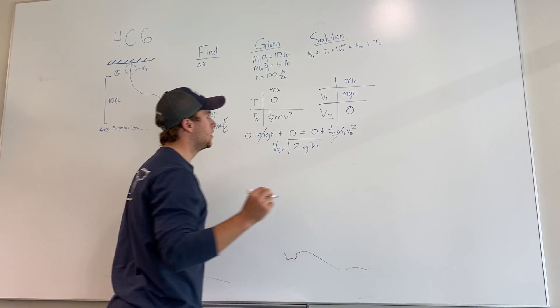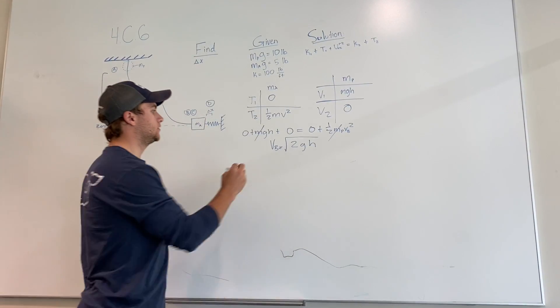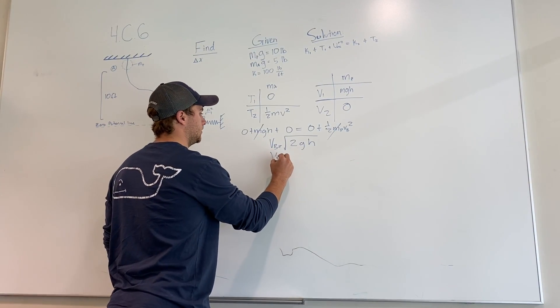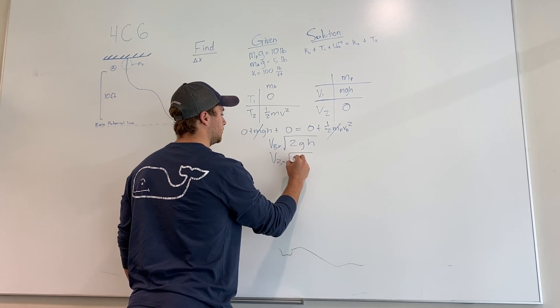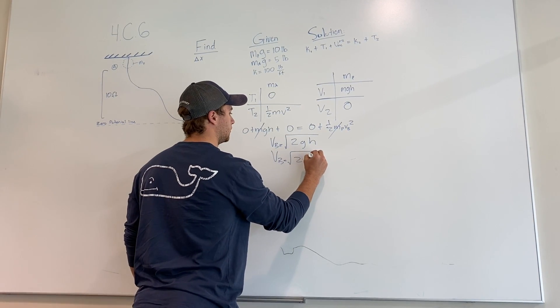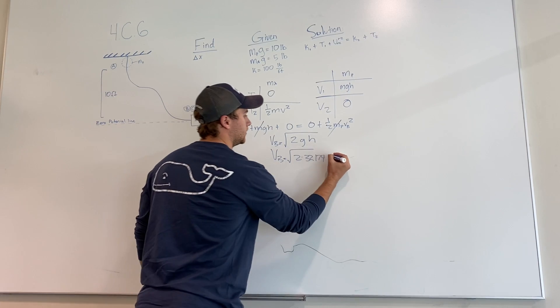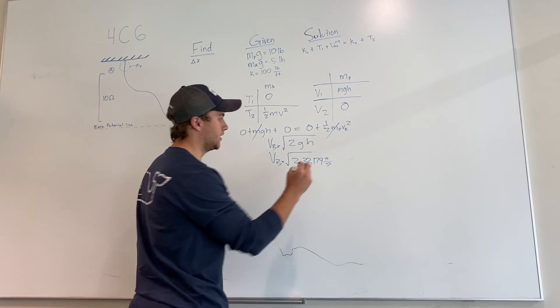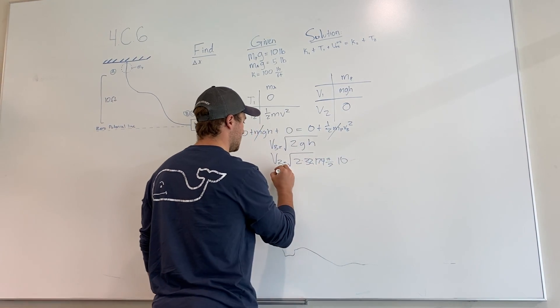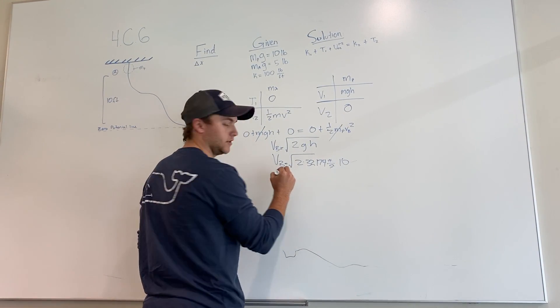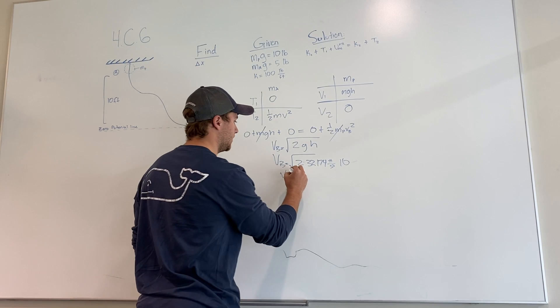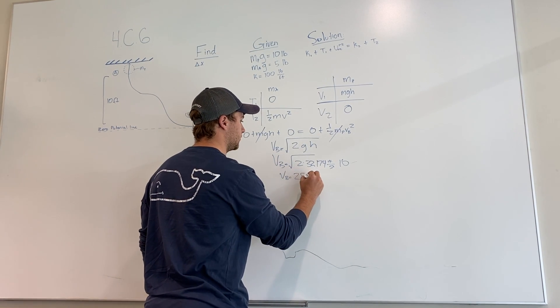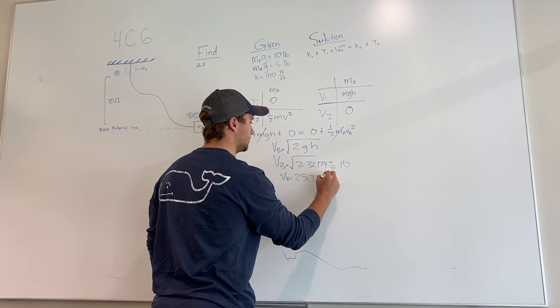And using, plugging these formulas, you get V B equals square root of 2 times 32.174 feet per second squared times the height, which is 10. And V B equals 25.37 feet per second.